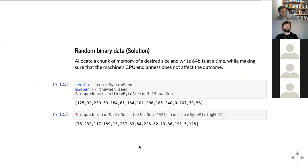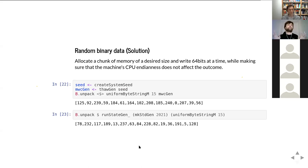A disclaimer that should have been said at the beginning: everything so far relates only to pseudo-random number generators that are not suitable for cryptography. These are for use cases such as simulations and property-based testing. That said, nothing prevents using cryptographic random number generators for those scenarios — for example, if you want to use a ChaCha-based algorithm for simulation, you can create an instance of the StatefulGen type class for it.